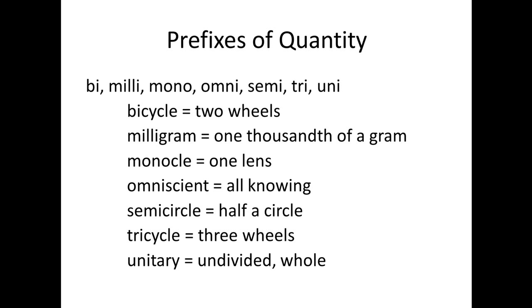There are also prefixes of quantity. Bi means two, mono means one, semi means half, tri means three, and omni means all. So a bicycle has two wheels, a tricycle has three wheels, a milligram is one thousandth of a gram, a monocle is one lens, omniscient means all-knowing, a semicircle is a half-circle, and unitary means undivided — whole, one. Knowing just those few little parts of words helps you figure out so many more.